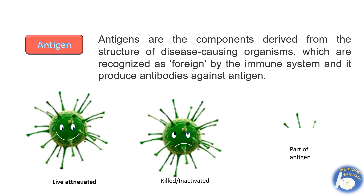Antigens can be live attenuated — meaning their disease-causing ability has been reduced — or they can be killed or inactivated, meaning their disease-causing ability has been completely removed and they are dead. Or there can be a part of an antigen, such as a protein or toxins, which can be included in the vaccine.